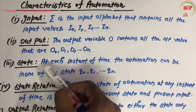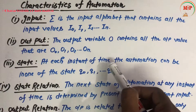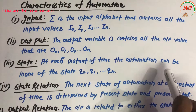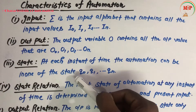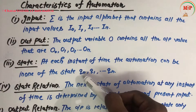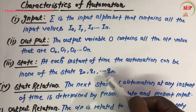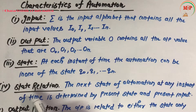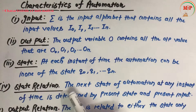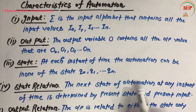The third point is state. At each instant of time, the automation can be in one of the states: Q0, Q1 till Qn. The fourth point is state relation — the next state of automation at any instant of time is determined by the present state and present input.